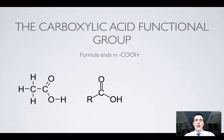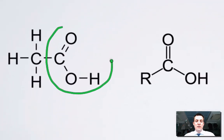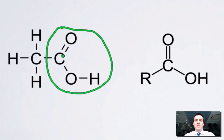Let's start off by talking about the functional group itself and seeing what it looks like. Here it is, circled in this molecule. So it's a carbon-oxygen double bond, as well as a carbon-oxygen-hydrogen bond. This part looks a bit like an alcohol, and this part looks a bit like an aldehyde or a ketone. But the two of them together means you've got a carboxylic acid.